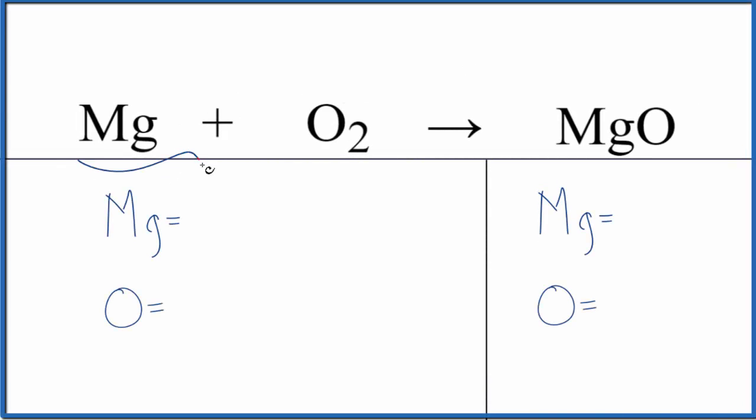Let's write the balanced equation for Mg plus O2 gives us MgO. This is magnesium, this is oxygen gas, and this is magnesium oxide.